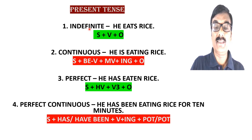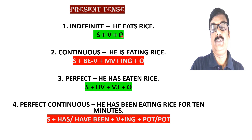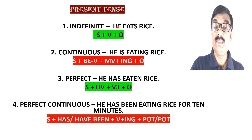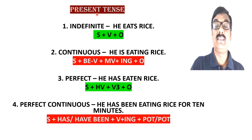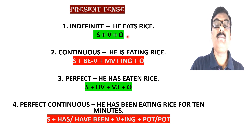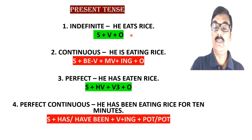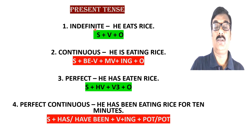The structure of present indefinite tense is: Subject + Verb + Object. For example, using 'he' as subject — he is third person singular number — the verb takes 's' or 'es' with third person singular number. So: 'He eats rice.' In present indefinite tense, the basic structure is Subject + Verb + Object, though sometimes a phrase or adverb may also be used.